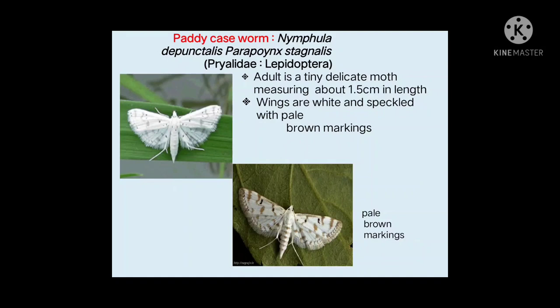Welcome to Insecta channel. In the last class we studied about insect pests of rice and the damage symptoms of yellow stem borer. Now we'll discuss the damage symptoms of the paddy case worm and the nature of damage. The scientific name of paddy case worm is Parapoynx stagnalis — the older name is Nymphula depunctalis. It belongs to the family Pyralidae and order Lepidoptera.